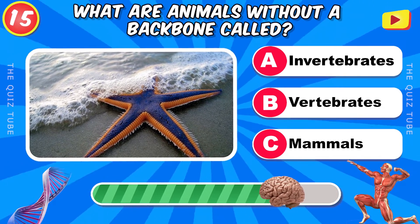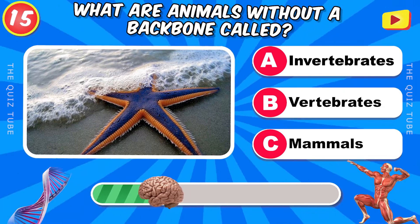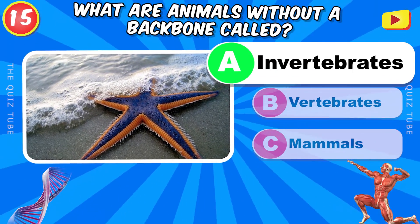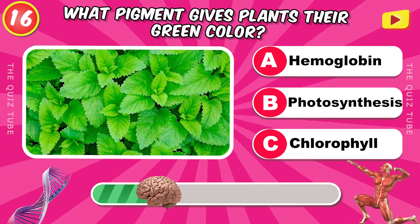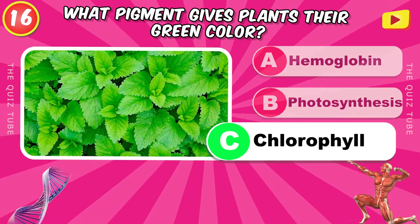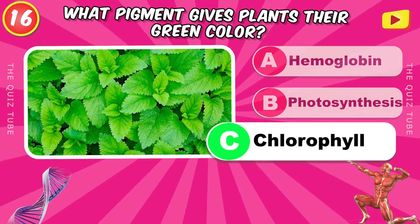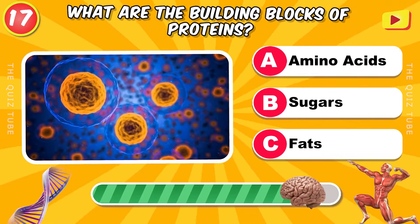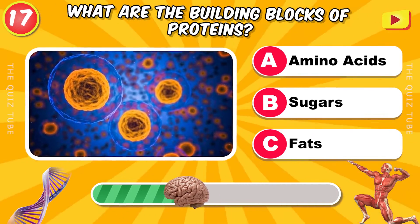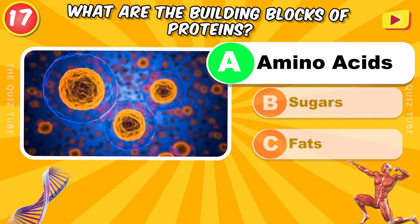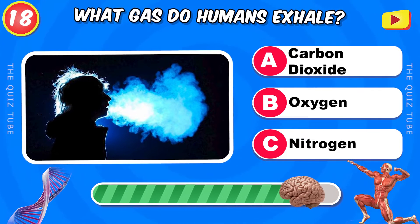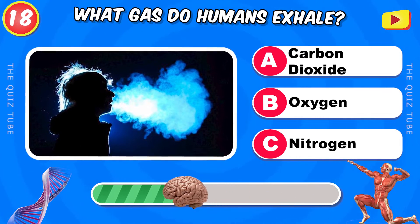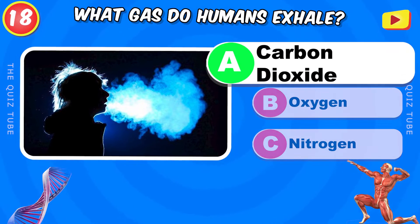What are animals without a backbone called? Invertebrates. What pigment gives plants their green color? Chlorophyll. What are the building blocks of proteins? Amino acids. What gas do humans exhale? Carbon dioxide.